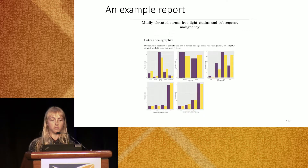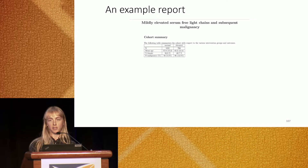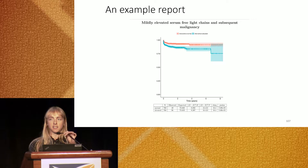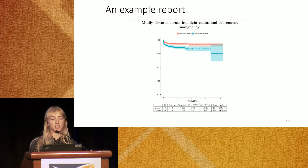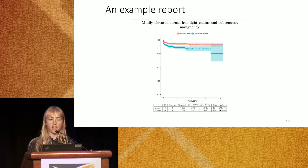Starting on page two, we go into a deeper dive, giving details on the cohort demographics included in the analysis, including outcome rates and demographics information. In the case of a survival analysis, which this consult was for, we show the actual output in the form of a survival plot, showing that patients with mildly elevated serum-free light-chain test results have worse malignancy-free survival than patients with a normal serum-free light-chain test result.